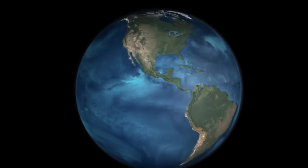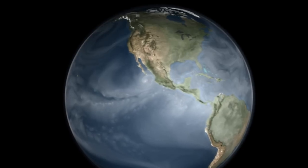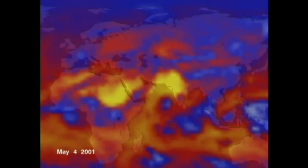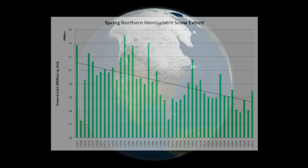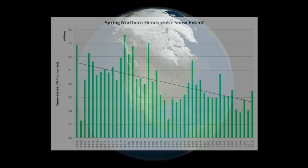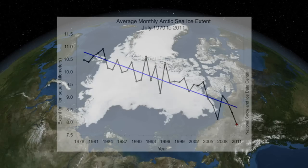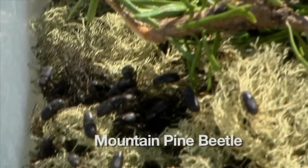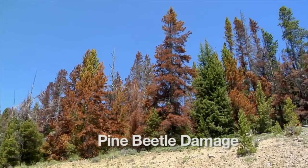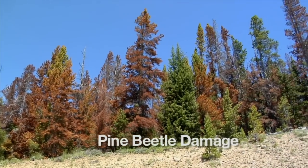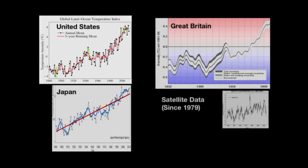A number of other indicators of global warming have also been observed. Heat waves are becoming more frequent. Cold snaps are now shorter and milder. Snow and ice cover are decreasing in the northern hemisphere. Glaciers and ice caps around the world are melting. Many plant and animal species are moving to different latitudes or higher altitudes due to changes in temperature. The picture that emerges from all of these data sets is clear and consistent: Earth is warming.